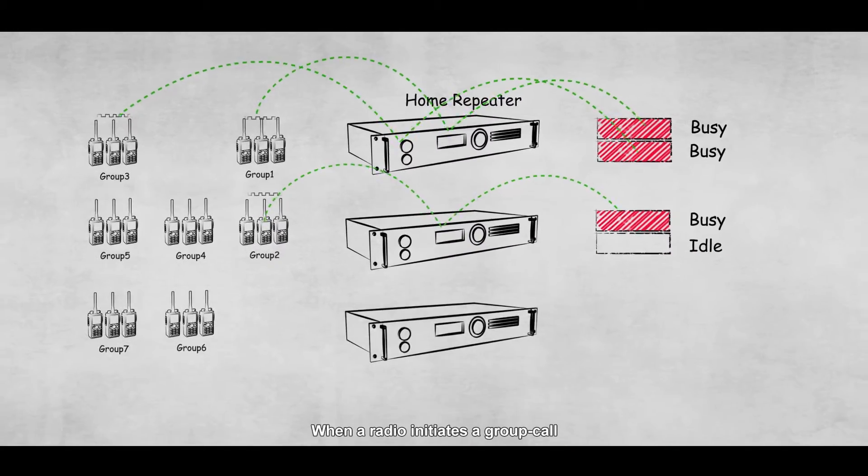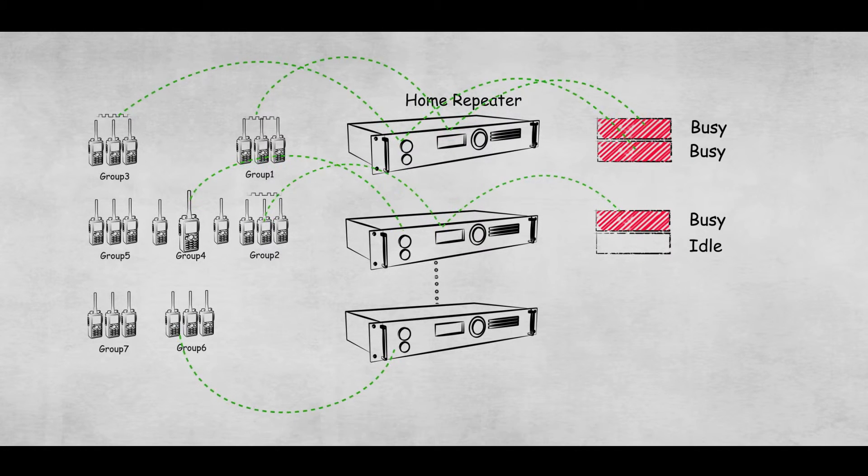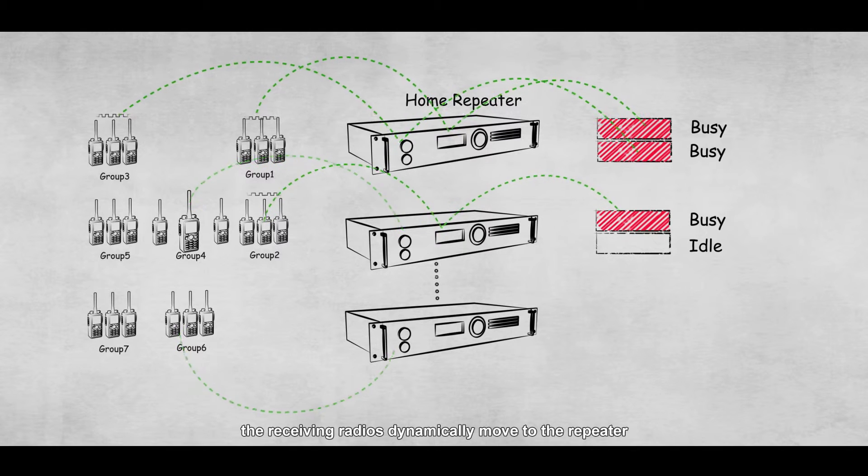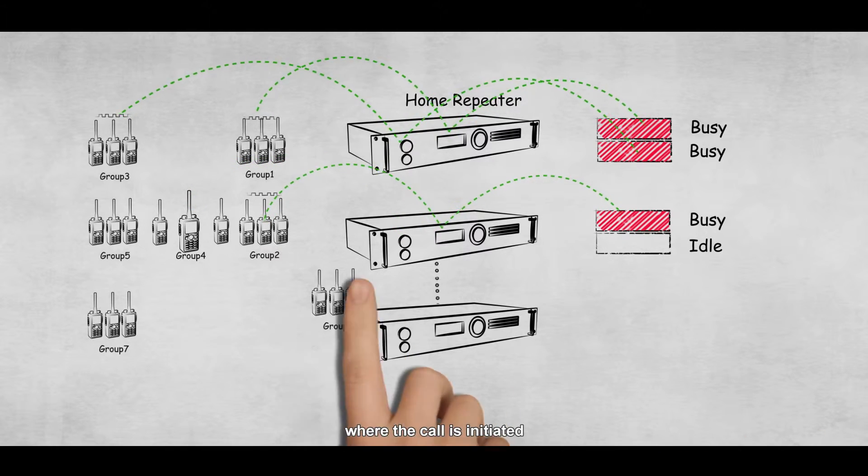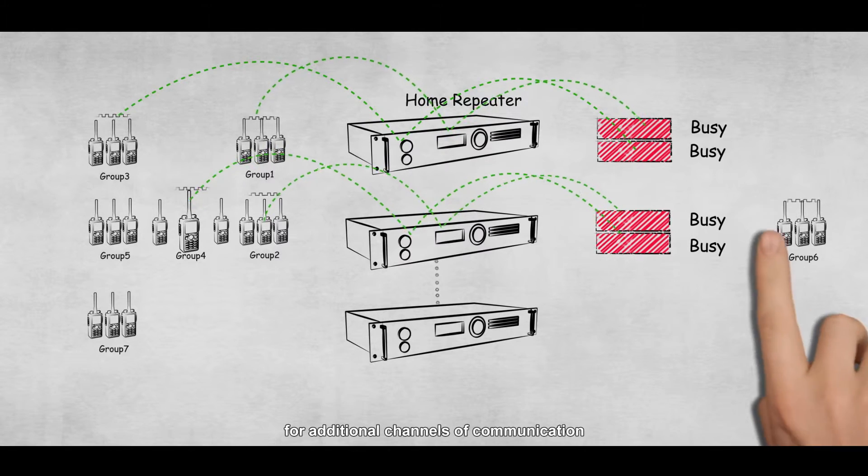When a radio initiates a group call or all call with groups under a different repeater, the receiving radios dynamically move to the repeater where the call is initiated, freeing up the other repeater for additional channels of communication.